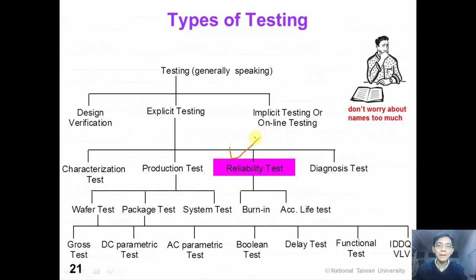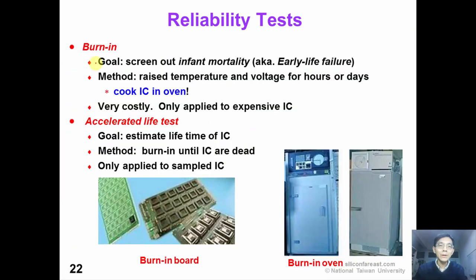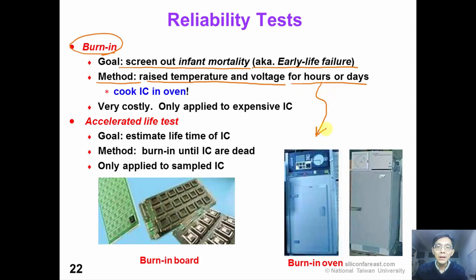Now let's move on to reliability test. There are two types of reliability test. The goal of burn-in test is to screen out infant mortality, which is also known as early life failure. The approach of burn-in test is to raise the temperature and voltage in the oven — this is like cooking the IC in the oven for hours or even days. As you can see, this is a very costly test, so burn-in is only applied to expensive ICs such as CPUs.